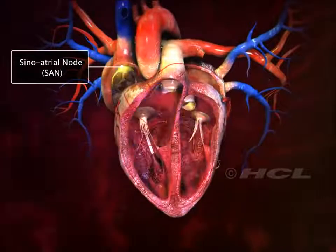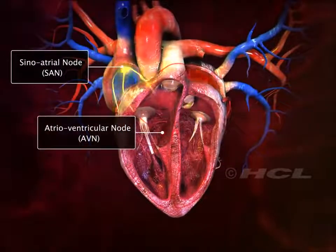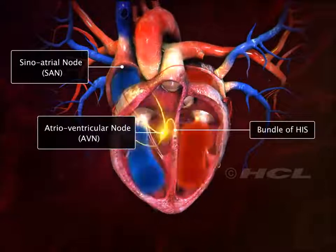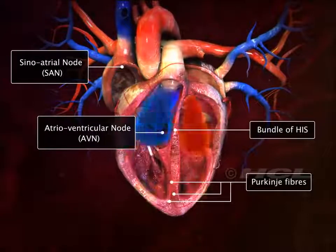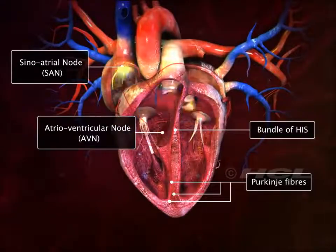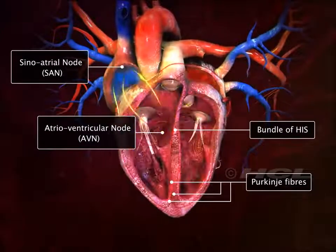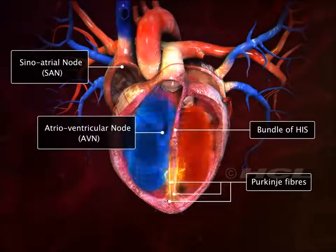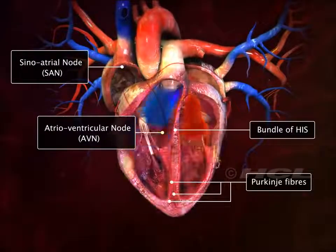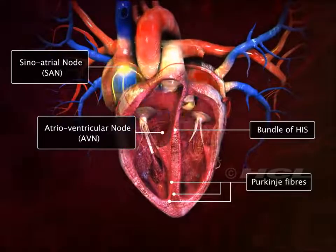The sinoatrial node, atrioventricular node, bundle of His, and Purkinje fibers represent the specialized cardiac tissue. These fibers are auto-excitable, as they have the potential to generate electrical activity without any external stimuli. This makes the heart beat continuously.